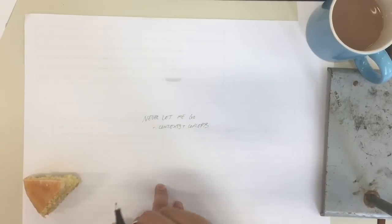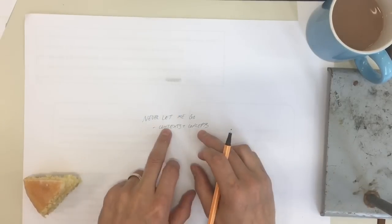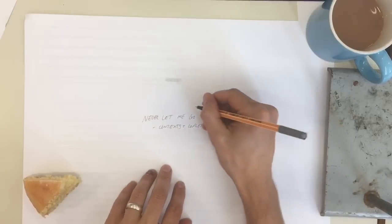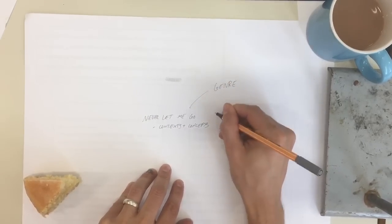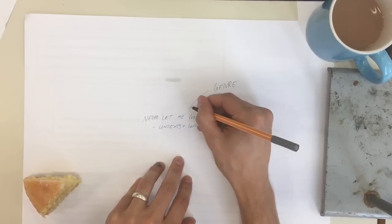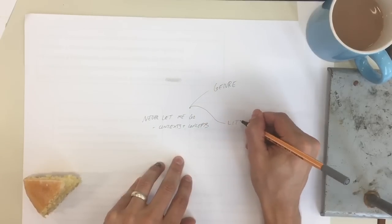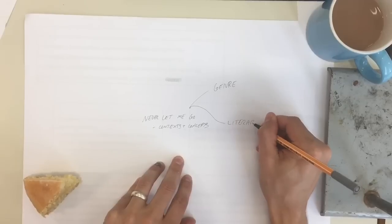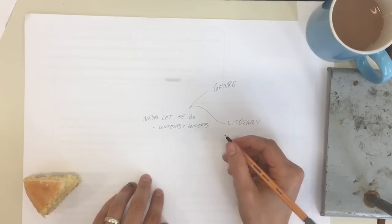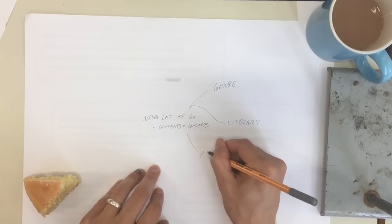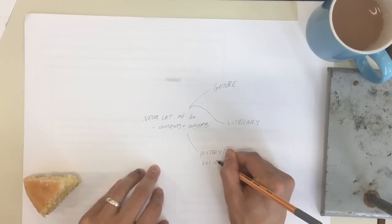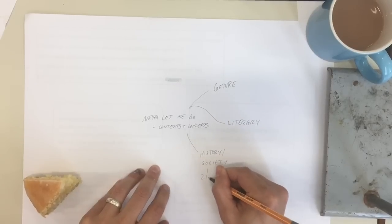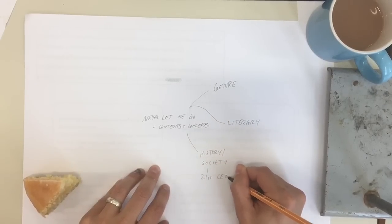So Never Let Me Go, Key Contexts. We're going to break that down into context of genre and attached to that would be this idea of literary contexts of the novel. We're going to look at history or society.